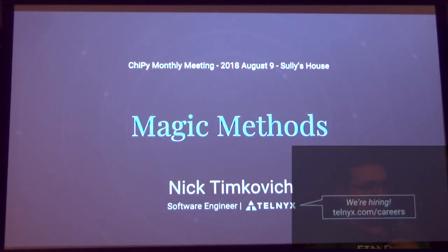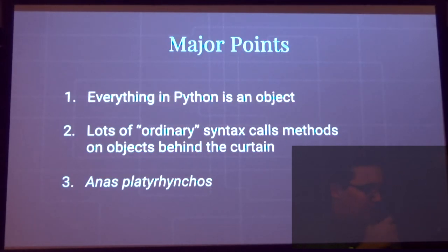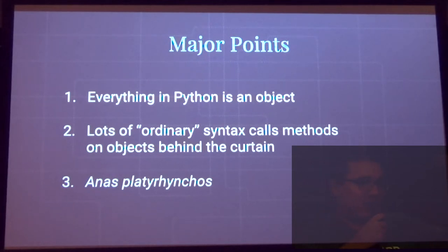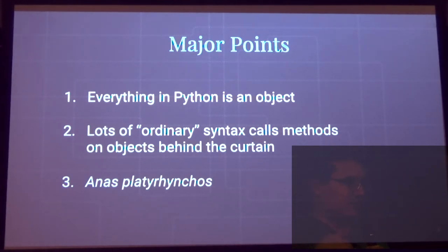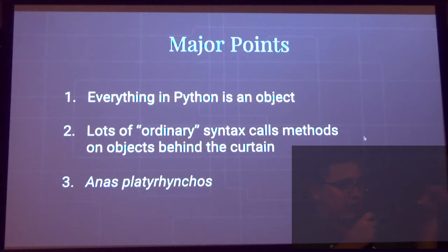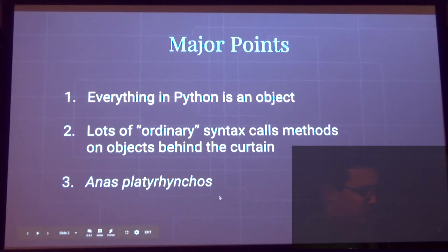Do people know what magic methods are in Python? In Python, everything is an object. When you say A equals two, A is an object, two is an object. If you instantiate classes — dictionaries, lists, sets, strings — these are all objects. Lots of ordinary syntax calls, like adding two things together, are behind the scenes calling methods on these objects. Magic is, I don't know, it's Latin. We'll get to that.